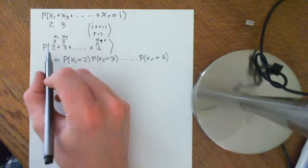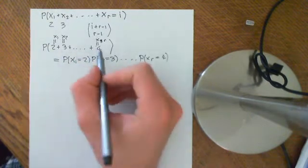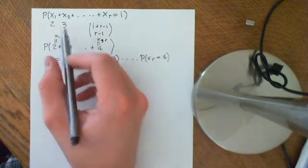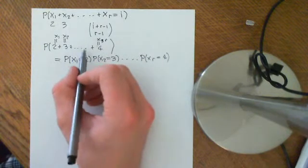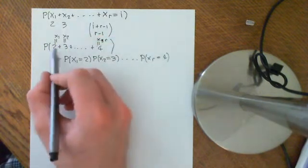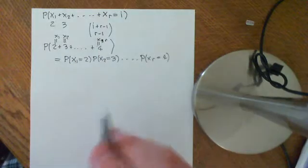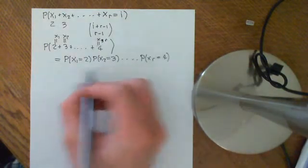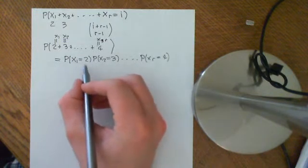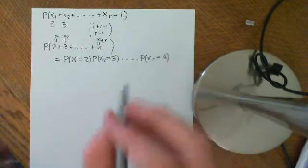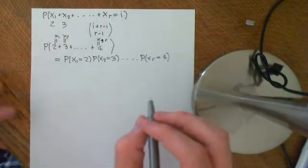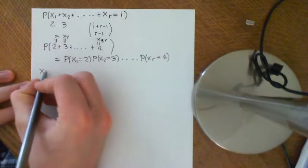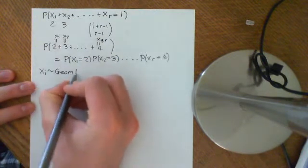So now we're saying, given a specific way of distributing the biscuits, we gave 4 biscuits to child xr, we gave 3 biscuits to x2, 2 biscuits to child x1, and we gave lots of biscuits to the people in between as well, such that all of the biscuits overall added up to i. What's the probability of that happening? And because the variables are independent, it's going to be equal to probability that x1 is equal to 2, times the probability that x2 is equal to 3, all the way up to times the probability that xr is equal to 4. Now we say, all of these variables xj were distributed geometrically with respect to p.